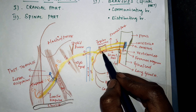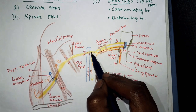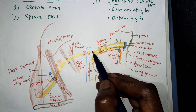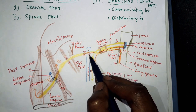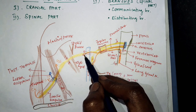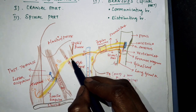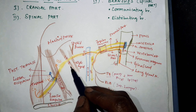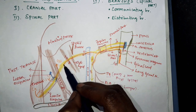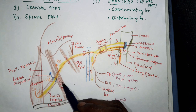The spinal part then runs laterally to enter the intermediate compartment of the jugular foramen, where for a short distance it joins with the cranial part. At the exit, it turns downward and backward, going deep to the internal jugular vein, crossing superficially the occipital artery, then accompanying the lower sternomastoid branch of the occipital artery. It descends downward and backward, passing deep to the styloid process, styloid muscle, and the posterior belly of the digastric muscle.